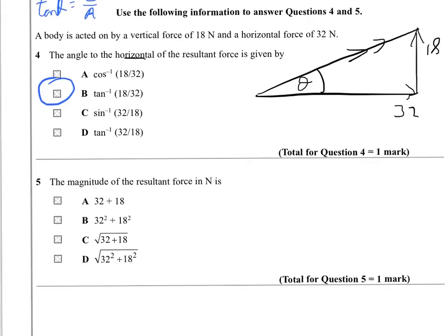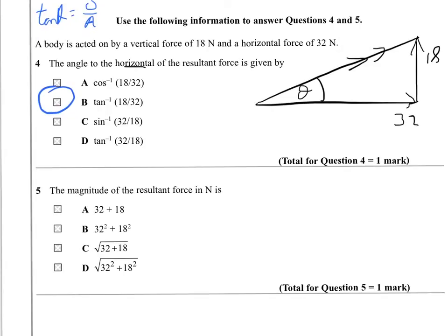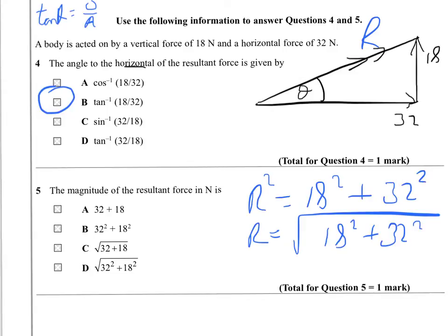The magnitude of the resultant force in newtons is going to be one of these expressions. If we call this value R, then R squared equals 18 squared plus 32 squared. That means R is the root of 18 squared plus 32 squared, and that's answer D.